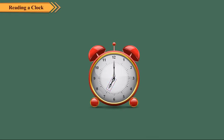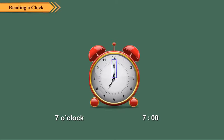Here, the hour hand is at 7 and the minute hand is at 12. So, the time is 7 o'clock. We can also write it as 7.00. When the minute hand is at 12, the time is the exact hour shown by the hour hand.